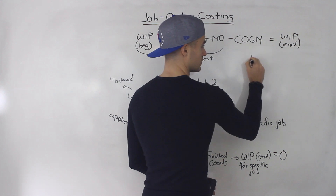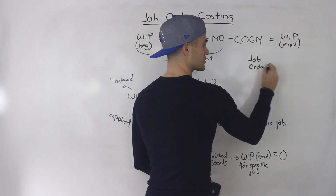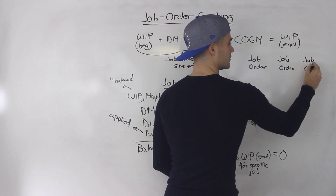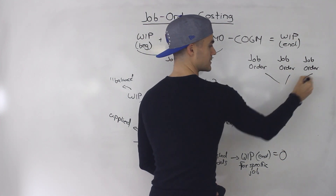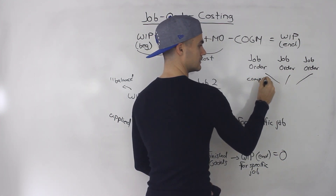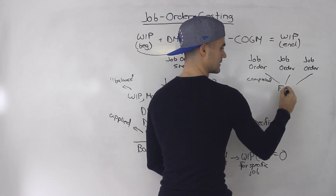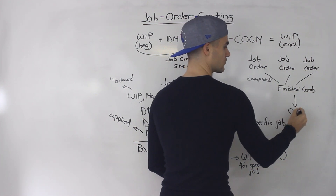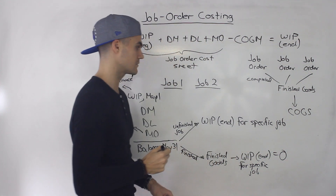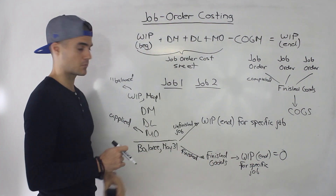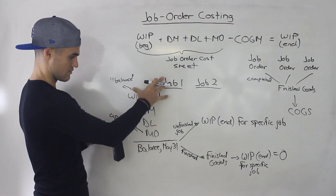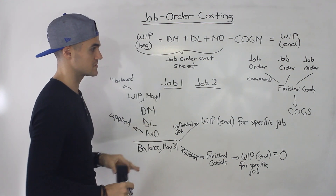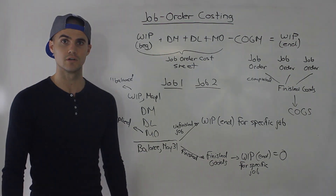In general, you're going to have a bunch of job orders, and at some point they get completed. Then the rest is exactly the same as before — they go into finished goods, and once sold, they go into cost of goods sold on the income statement. That's basically how job order costing works. This statement per job is called a job order cost sheet. We're going to get into more specifics when we do examples with actual numbers.